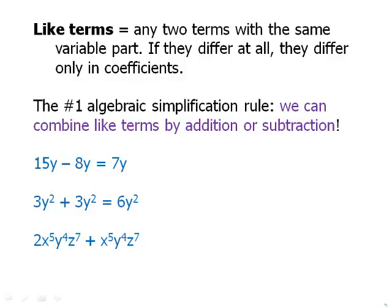And that final one, notice that thing is awfully complicated. But the two terms are actually like terms. Because the variable part, x to the fifth, y to the fourth, z to the seventh, those are identical between the two terms. So we have 2 of the thing plus 1 of the thing. And of course whenever you have 2 of anything plus 1 of the same thing, you get 3 of that thing. So that's how we simplify that.